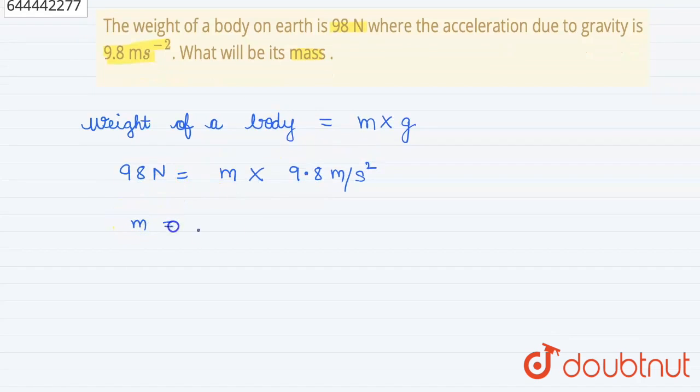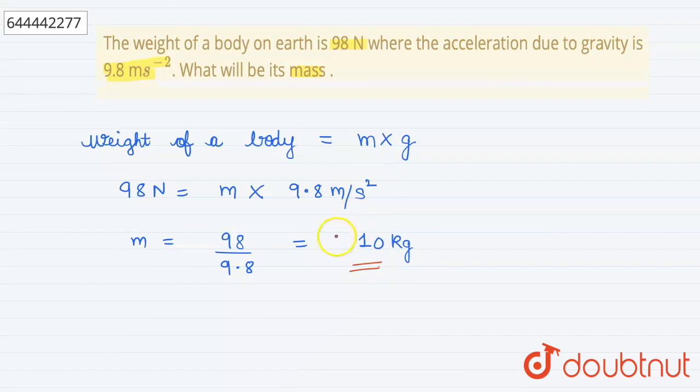Therefore, m will be 98 upon 9.8, which will be 10 kg. Therefore, the mass of the body is 10 kg. Thank you.